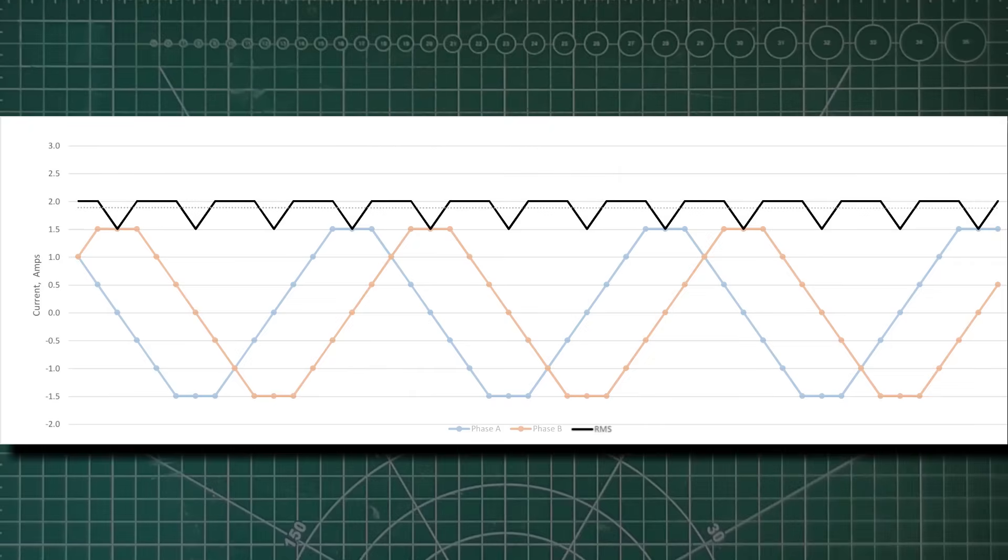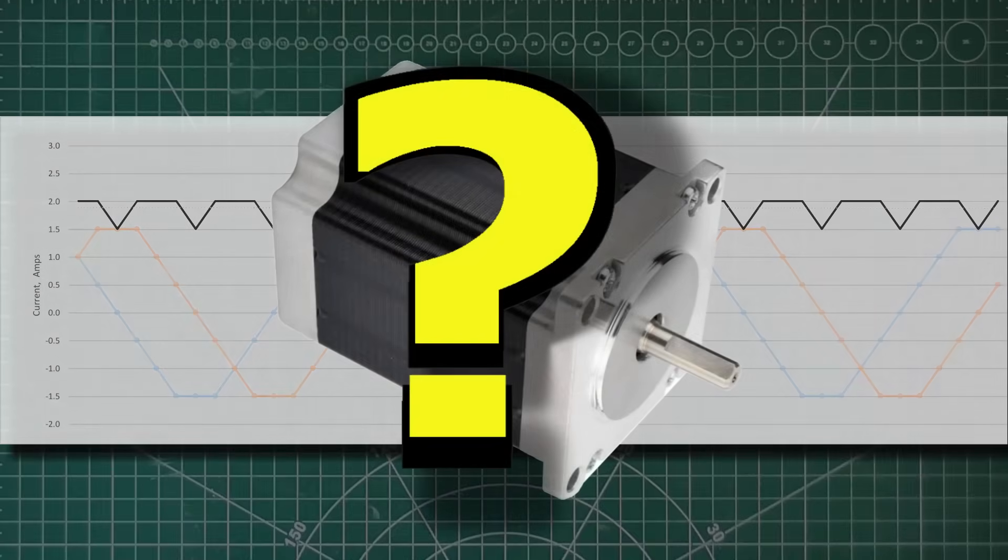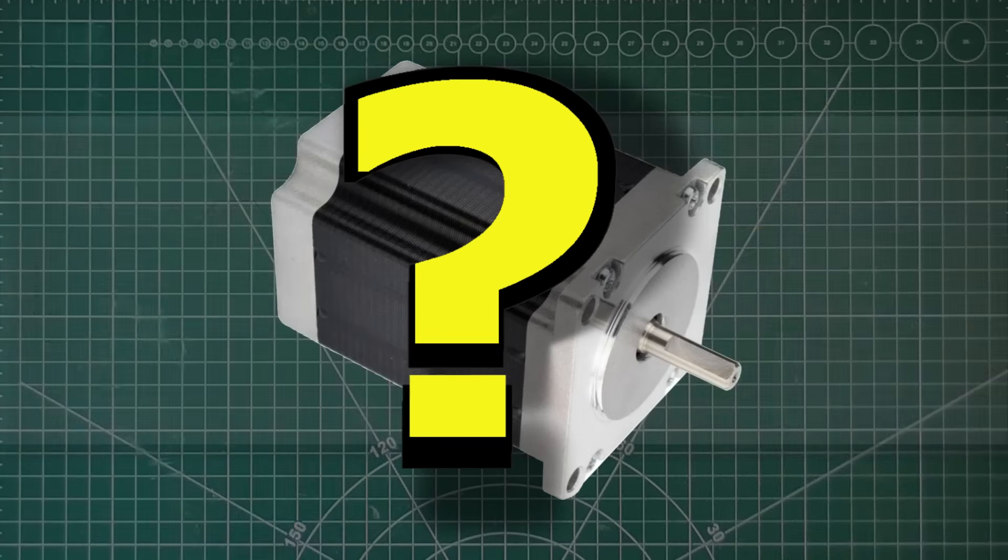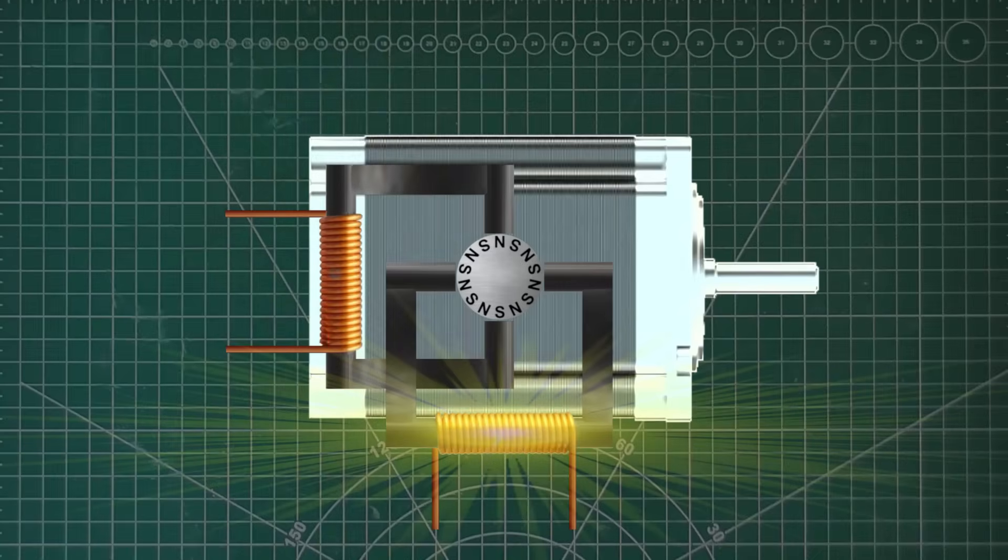So in short, to answer the question about the current, the motor should never draw more than the peak current the driver is set to. That's in total, for both phases. Each phase can draw up to the maximum current on its own, when the other phase is off. Or they can share the current between them. But it never exceeds the peak value in total.